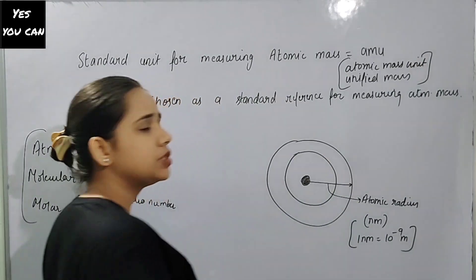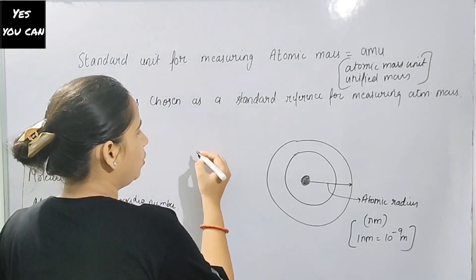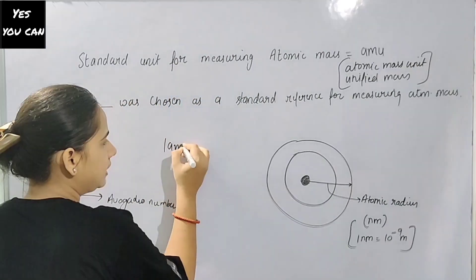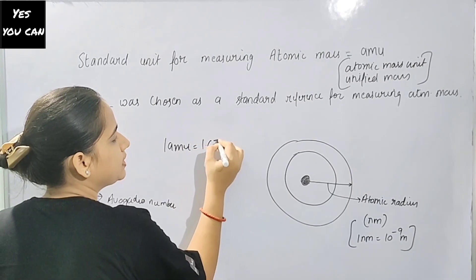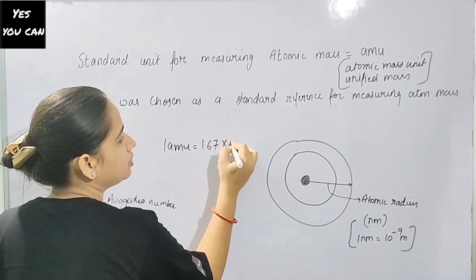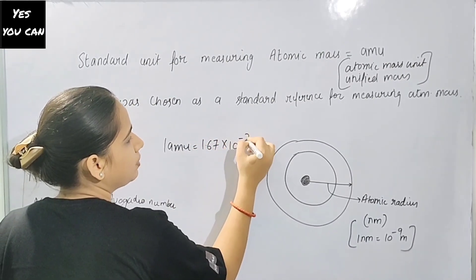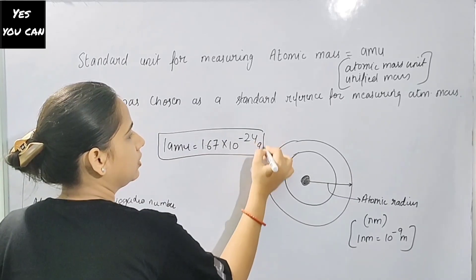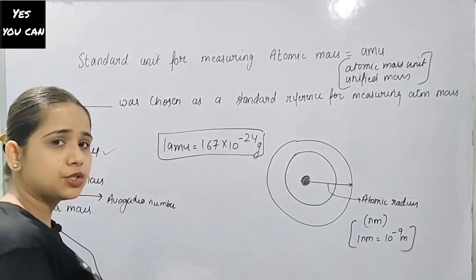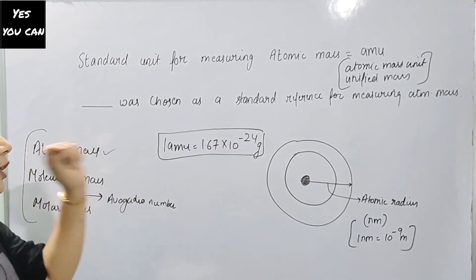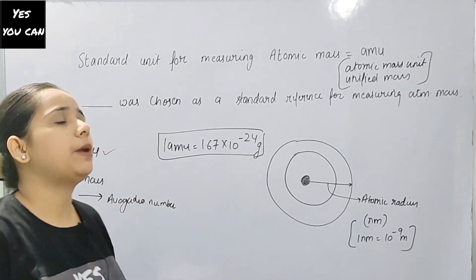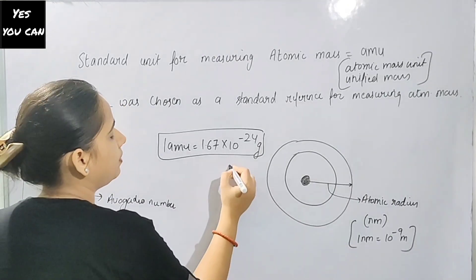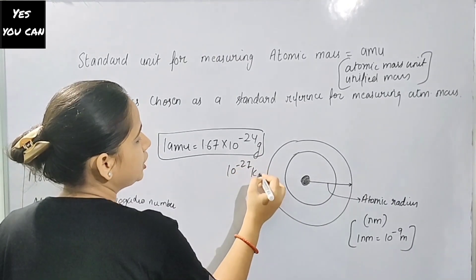1 AMU is equal to 1.67 × 10 raised to the power minus 24 grams. We can also write this as 10 raised to the power minus 27 kg.